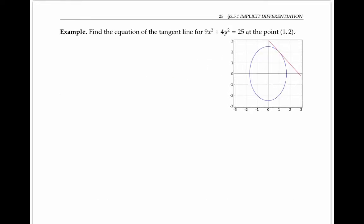For our first example, let's find the equation of the tangent line for the ellipse 9x² + 4y² = 25, drawn below at the point (1,2). From the picture, it looks like the slope of this tangent line should be about negative one, but let's use calculus to find it exactly.